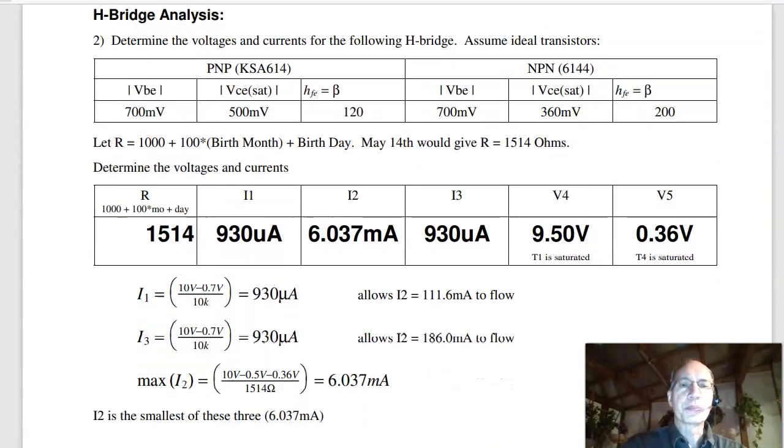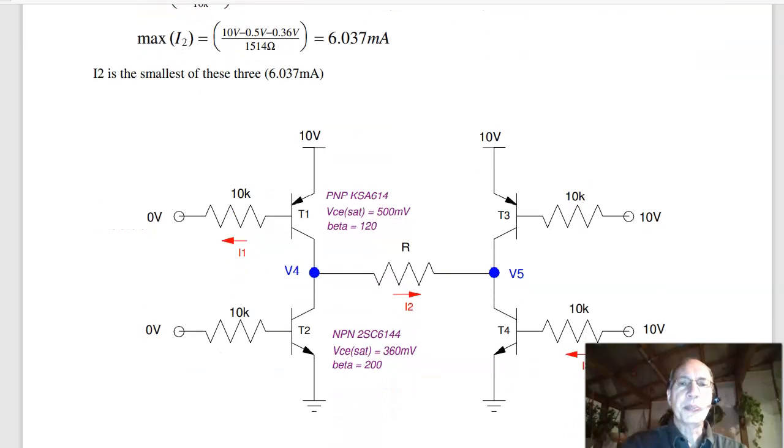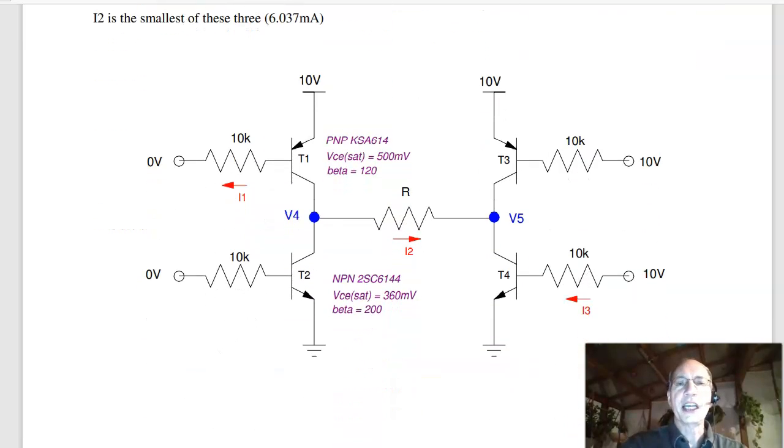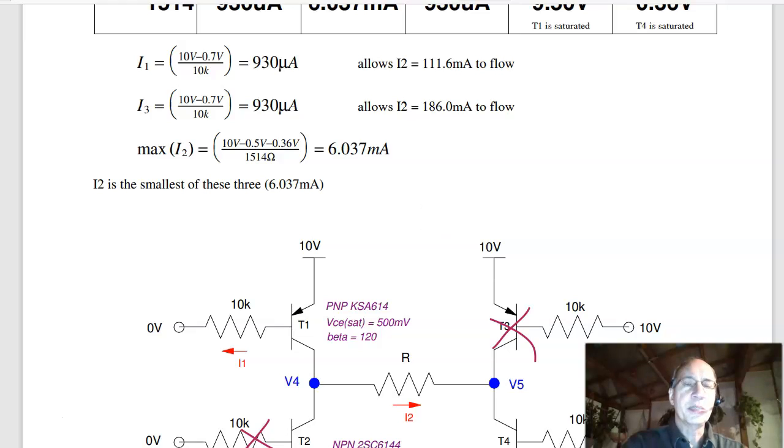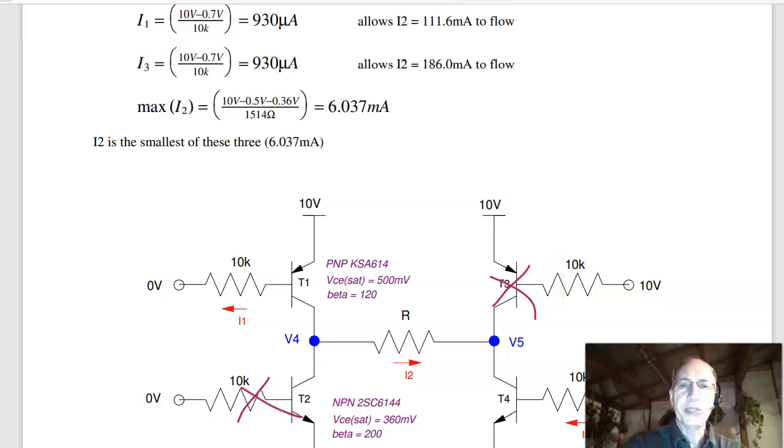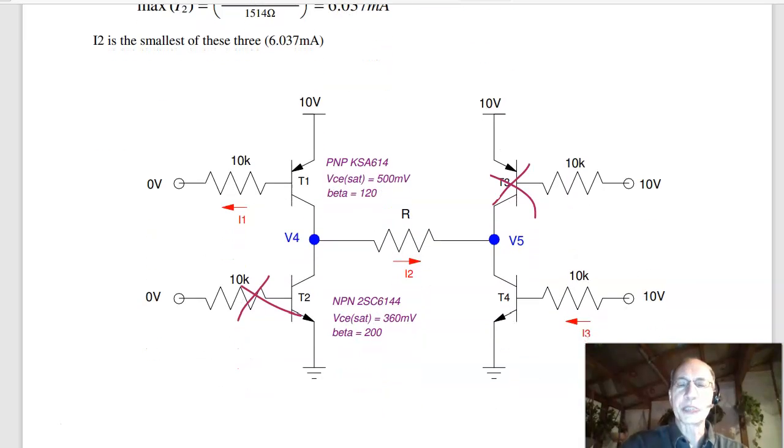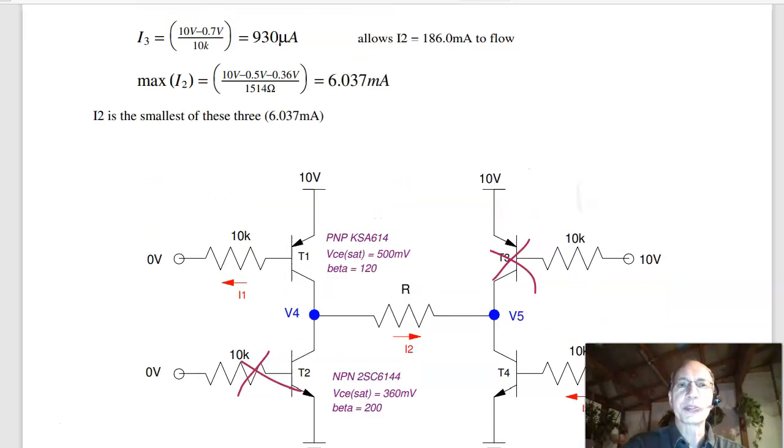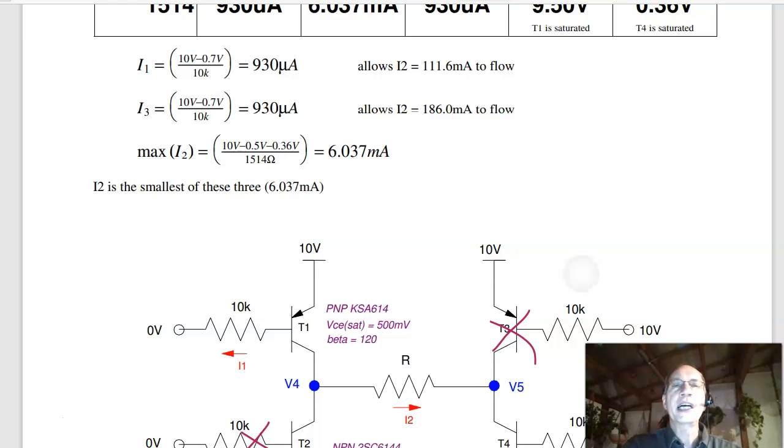Problem number two. Same idea, but if I reduce the base resistors to 10k, now find the voltages. Same procedure as before. This guy is turned off, T2. T3 is turned off. The current I1 is 10 minus 0.7 over 10k, 930 microamps. I3, down here, is 10 minus 0.7 over 10k, 930 microamps.